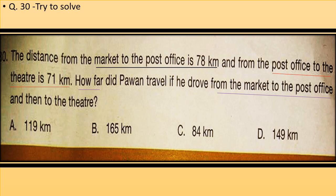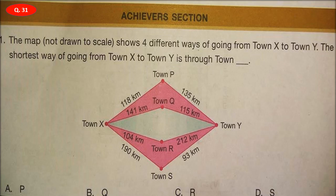Question number 31 (Achiever Section — 2 marks): The map, not drawn to scale, shows four different ways of going from town X to town Y. The shortest way of going from town X to town Y is through town dash. See the figure — there are four different ways; find which is the shortest route from town X to town Y.